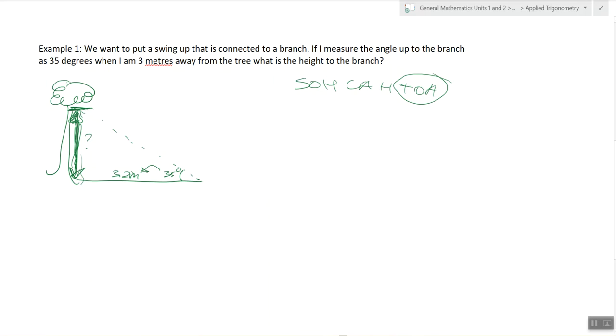So if you're measuring from the ground 35 degrees, and when you're 3.2 meters away from the tree, you want to find the height to that branch. So we've got the adjacent to the angle. We want to find the opposite.